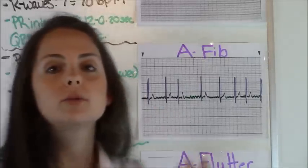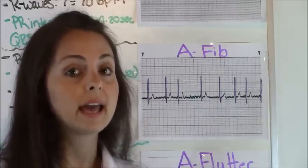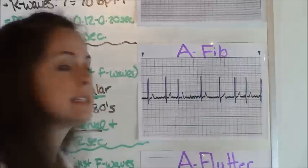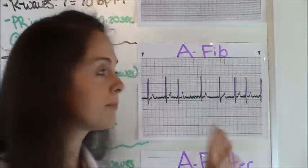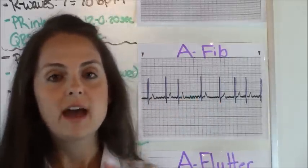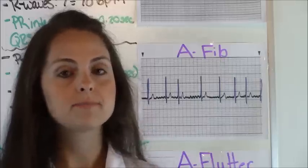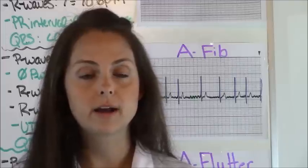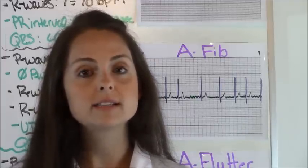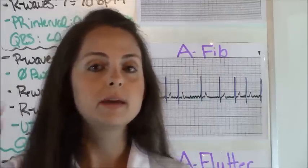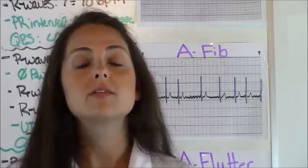Next, you would count your PR interval, but we can't because we don't have any P waves. We can count our QRS complex though, and it's definitely less than 0.12 seconds — very narrow. So the hallmarks of AFib are: no P waves, unable to count atrial rate, and irregular R waves because the atrium are quivering at various times causing those irregular R waves.